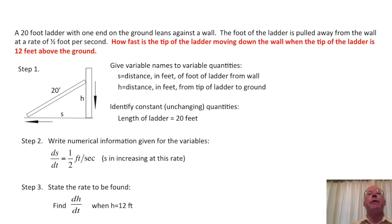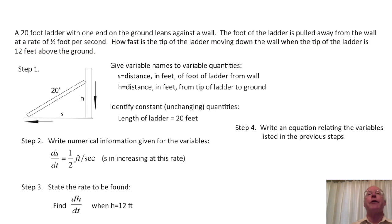Now we use the variables. Our first task is to write an equation relating the variables. Our variables are h and s. Look at the picture to see how they are related. We see by the Pythagorean theorem that s squared plus h squared is 20 squared. You can see from this equation that as s gets bigger, h gets smaller. This is also reflected in the picture.